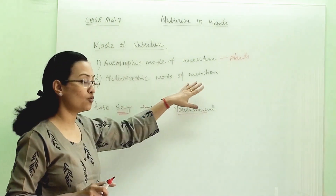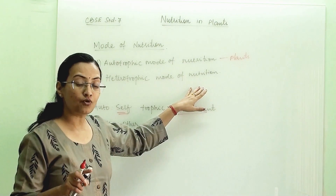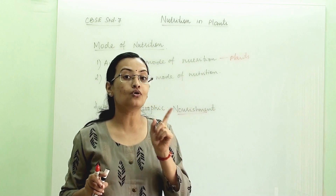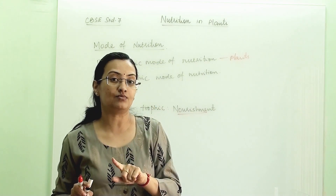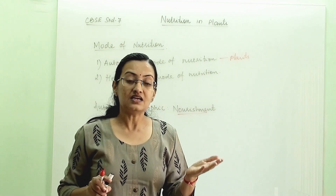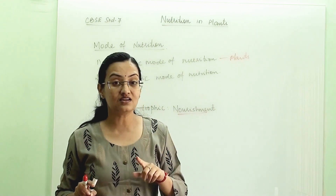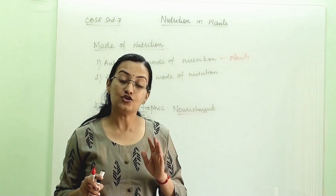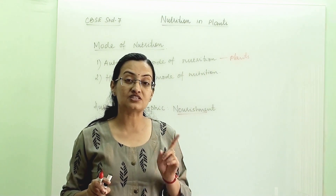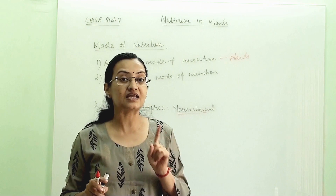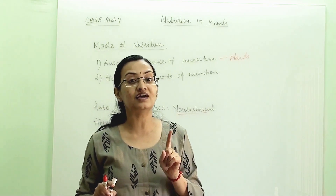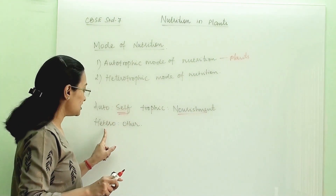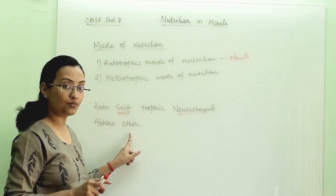Heterotrophic mode of nutrition is followed by all the animals because they are depending either on plants or on other organisms. For example, deer is depending upon plants whereas tiger is depending upon other animals. All animals and humans are termed as heterotrophs because they are depending upon plants and animals to fulfill their food requirement — they are not making their own food. So 'hetero' means other — they are depending upon other.